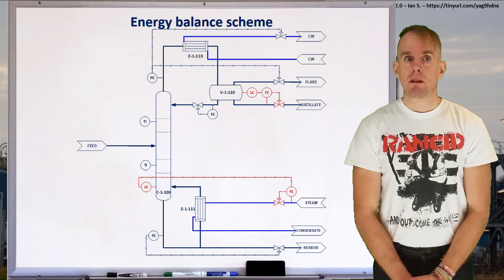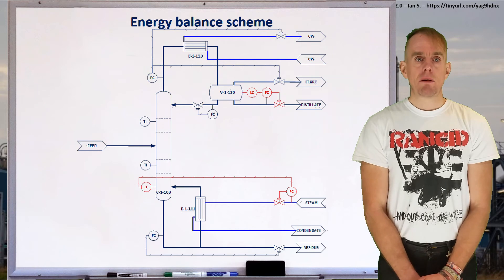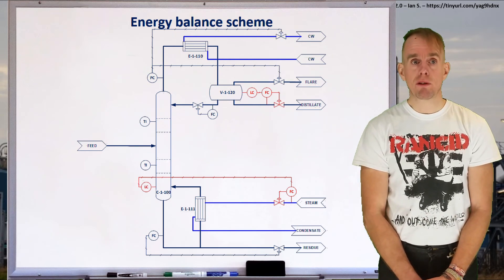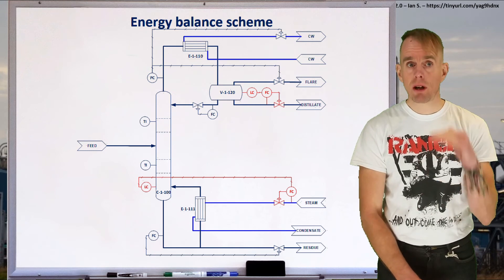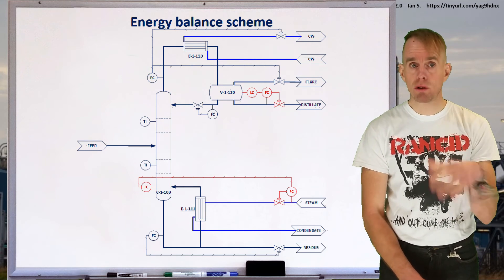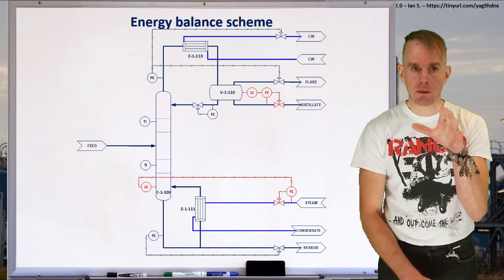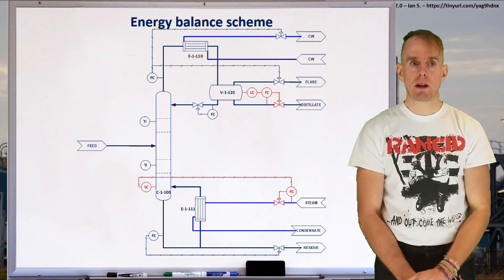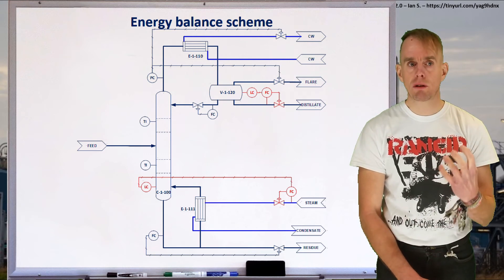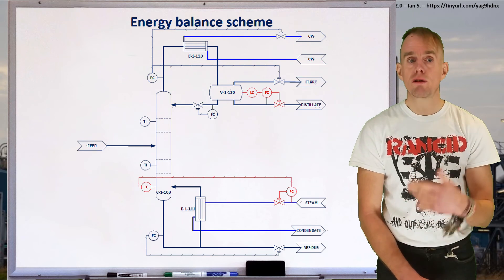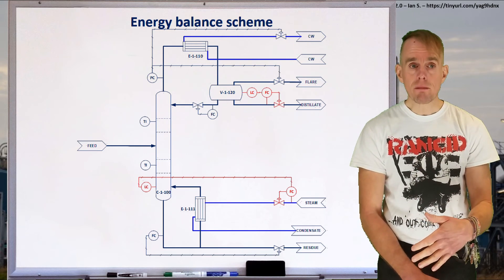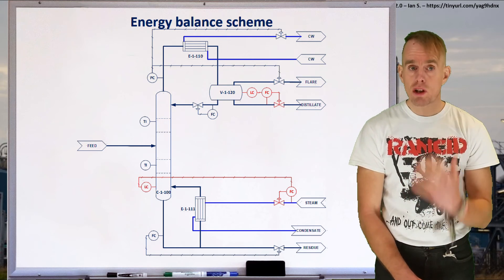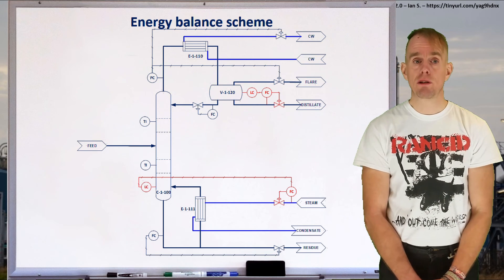Let's illustrate a simple energy balance scheme. The top of the column is unchanged from the previous material balance scheme — we've got level control on the reflux drum cascading onto the flow control to the distillate leaving the process. What we've changed is we've put energy balance control on the base of the column. The level controller for the sump now cascades onto the flow control of the steam into the reboiler. So if we wish to remove more material from the system, we change that steam flow rate to allow us to do that.